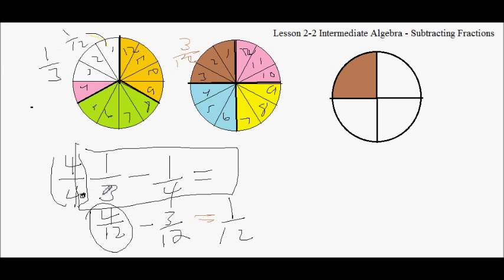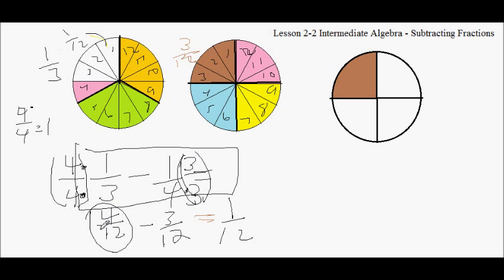I multiply the top number and the bottom number by the same number, because 4 over 4 is 1. And then this — I multiply by 3, because 3 times 4 is 12. I multiply the top number too, because I want to multiply by 1. 3 over 3 is 1. 3 times 1 is 3. 3 times 4 is 12. So now that I have 4/12ths minus 3/12ths, 4 minus 3 is 1. I get 1/12.